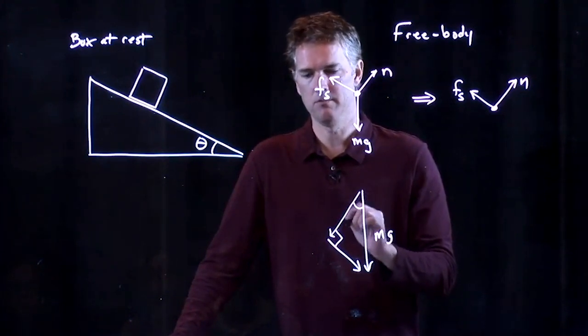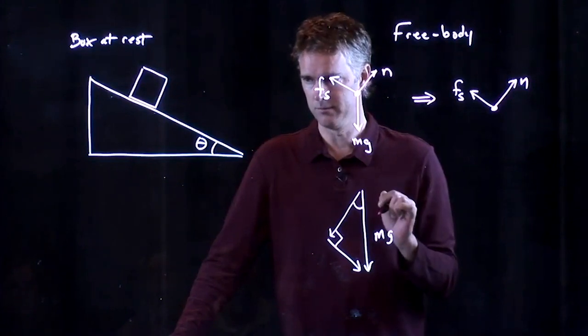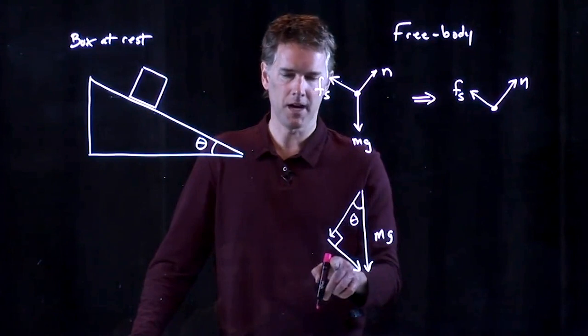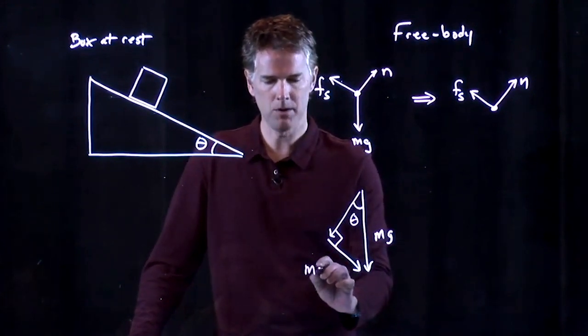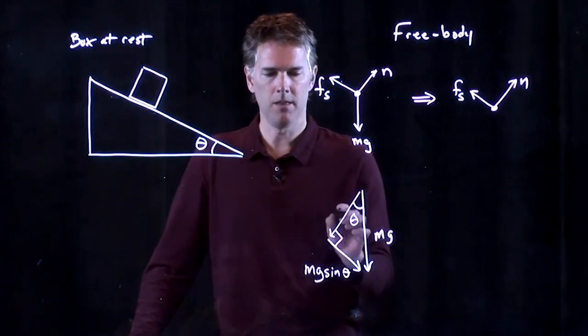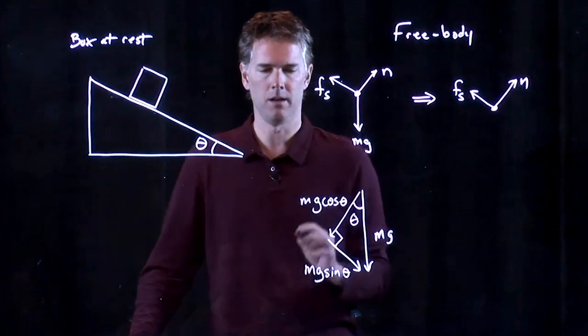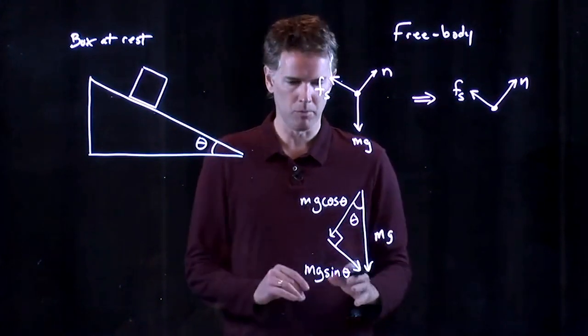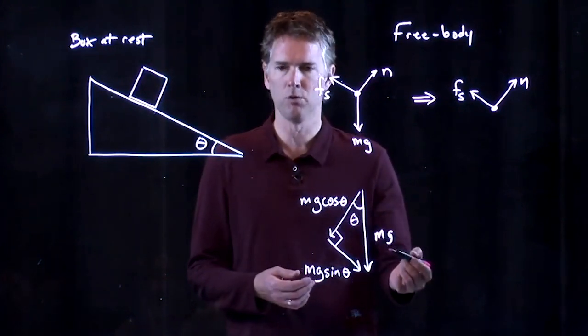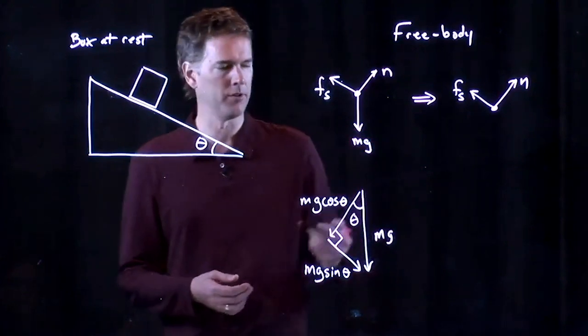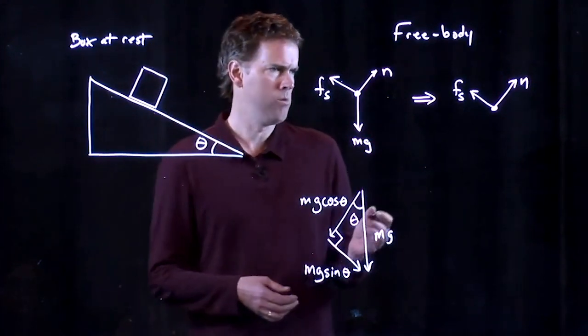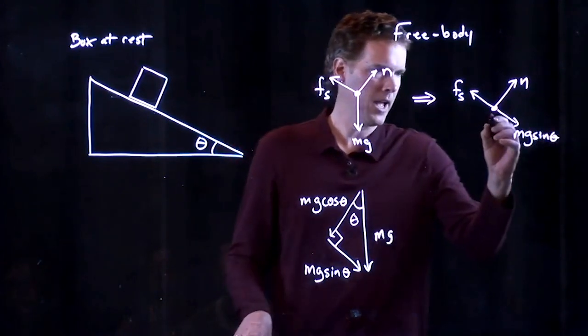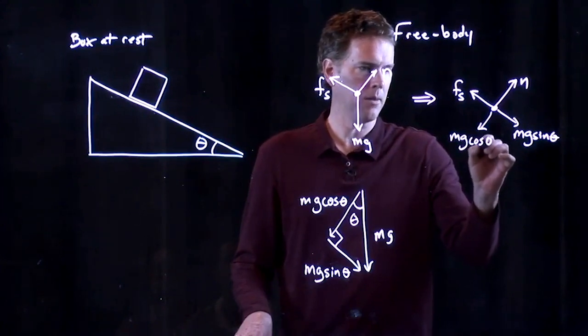And we need to figure out if this is theta or that is theta. And the way I like to do it is just take a guess and see if you're right. So, let's take a guess. Let's say that theta is right there. If that one is theta, then this side of the triangle has to be Mg sine theta. And this side of the triangle has to be Mg cosine theta. Okay. You can review your trig and convince yourself that that's right. But remember, SOHCAHTOA, sine is opposite over hypotenuse. Cosine is adjacent over hypotenuse. Tangent would be opposite over adjacent.